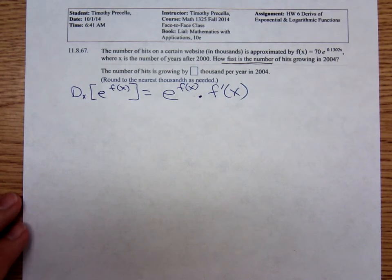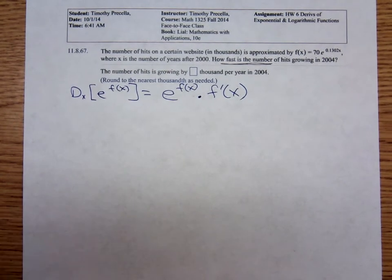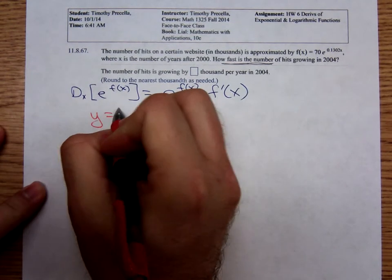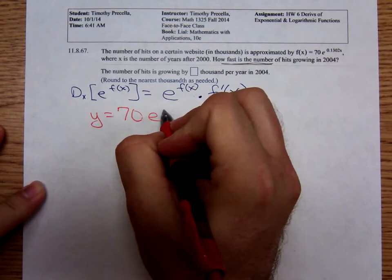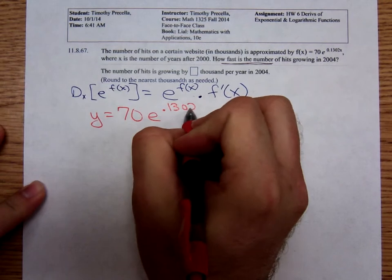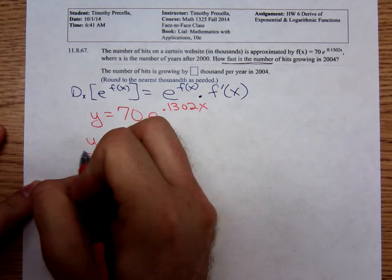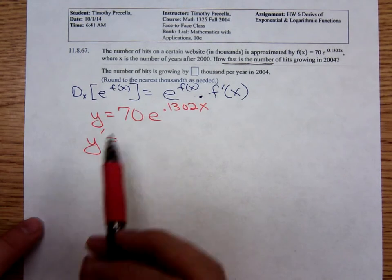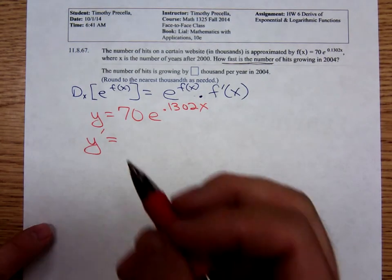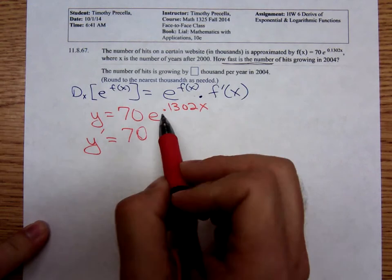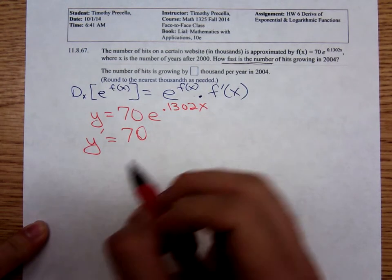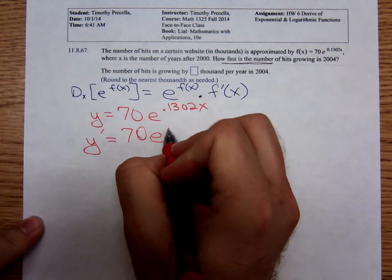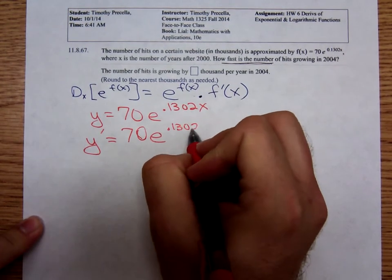So we have y equals 70e to the 0.1302x. Differentiating, y prime is equal to that coefficient 70, we just bring that down. The derivative of e to the 0.1302x is just e to the 0.1302x.